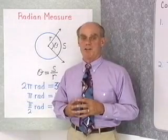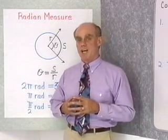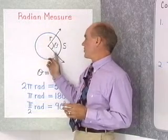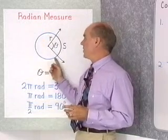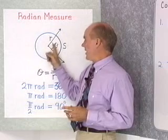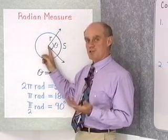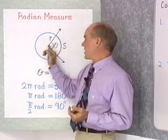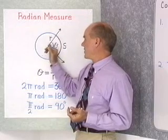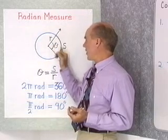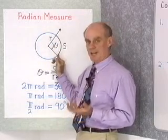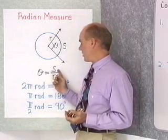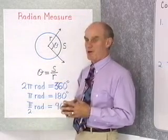In this section, we want to look at a second method of measuring angles: radian measure. Radian measure is defined in terms of a circle with a radius of r, and angle θ is a central angle in that circle. If θ is a central angle in a circle with radius r and θ cuts off an arc of length s, then the radian measure of θ is the arc length s divided by the radius r.